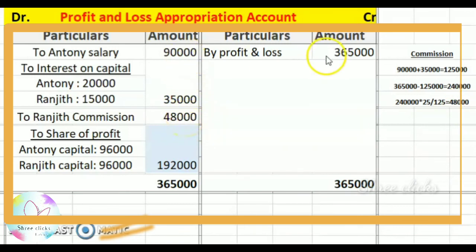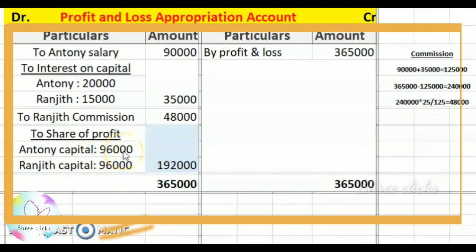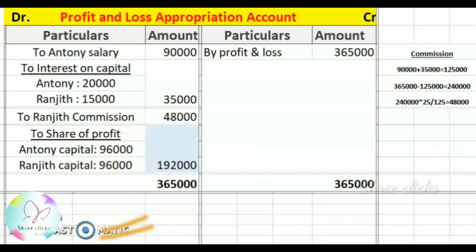Credit is 3,65,000. On the debit side: Anthony's salary, interest on capital, and commission total 1,73,000. That's all. Thank you.